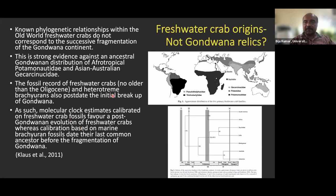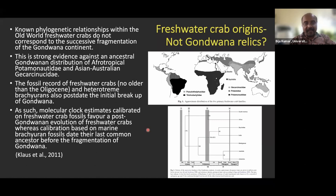Regarding the evolution of freshwater crabs, there is no consensus, primarily because of limited fossil records. Unlike freshwater fishes, there is no Gondwana connectivity evident in the fossil record of freshwater crabs. Molecular clock estimates favor a post-Gondwana origin for freshwater crabs, whereas marine crabs have records predating the breakup of Gondwana.